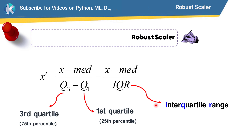IQR — the interquartile range — is basically Q3 minus Q1. So in the robust scaler, each data point is subtracted by the median and then divided by the third quartile minus the first quartile. This gives the transformed value.